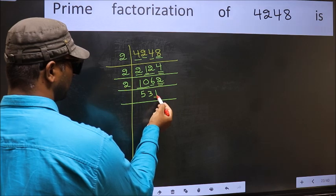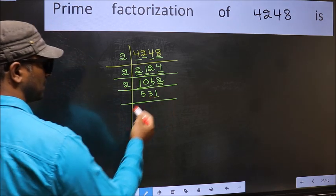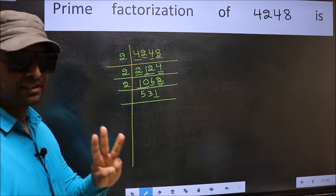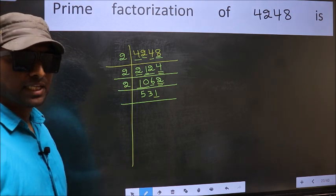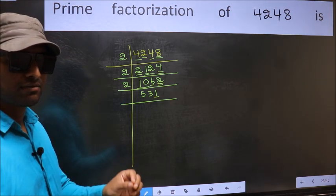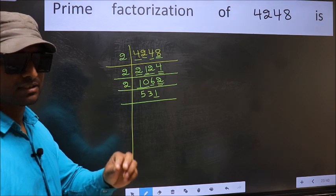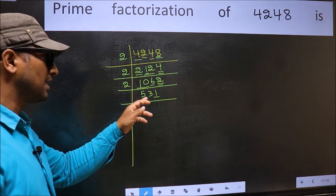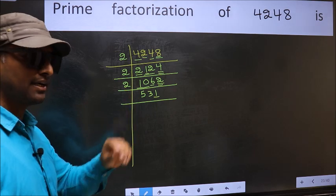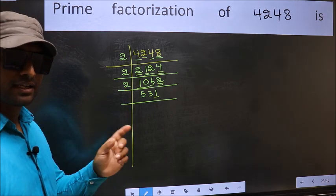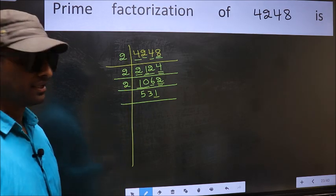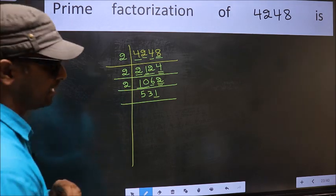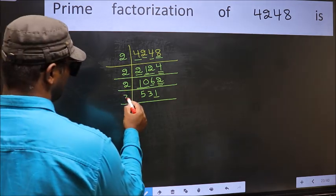Last digit 1 is not even, so not divisible by 2. Next, prime number 3. To check divisibility by 3, we should add the digits. 5 plus 3 plus 1 equals 9, and 9 is divisible by 3. So this number is also divisible by 3. So take 3 here.